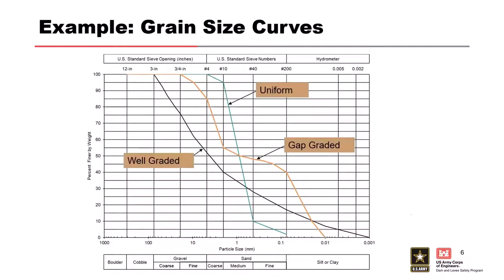Here are three example gradation curves. When you see big steep changes in the curve, that means there's a lot of material between those two sieves — for example, between the number 10 and the number 40 sieve for a uniform material. When you see flat areas, like on the gap-graded curve, that means there's not much material in that size range. Gap-graded materials are something to watch out for because they're usually internally unstable — finer material can migrate through the larger-grained matrix.